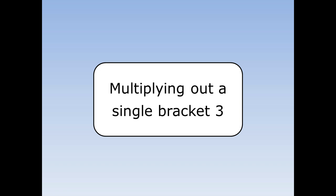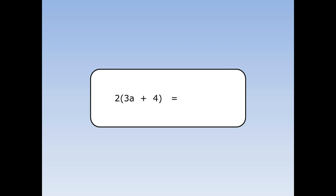Multiplying out a single bracket 3. We're going to multiply out this bracket. Remember, the 2 at the front multiplies everything inside the bracket. 2 times 3a is 6a. 2 times 4 is 8. When we multiply out this bracket, the answer is 6a plus 8.